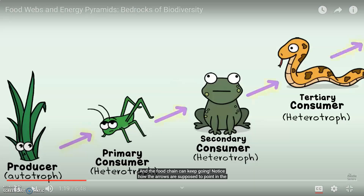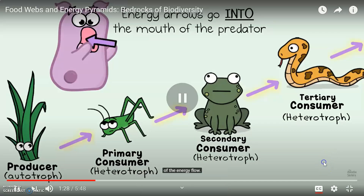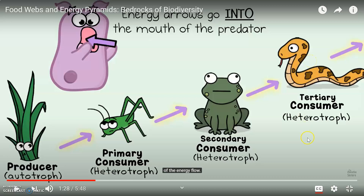The food chain can keep going. Notice how the arrows are supposed to point in the direction of the one doing the eating, which makes sense because that's the direction of the energy flow. Energy arrows are always drawn to the organism that is eating. The energy arrow is going into the mouth of the predator. So the grasshopper eats the producer, so the arrow points to the thing eating it. The frog eats the grasshopper, so the arrow is pointed to the frog. And the snake eats the frog, which is why the arrow is pointed to the snake. Wherever the arrow points, that's the thing that is eating.